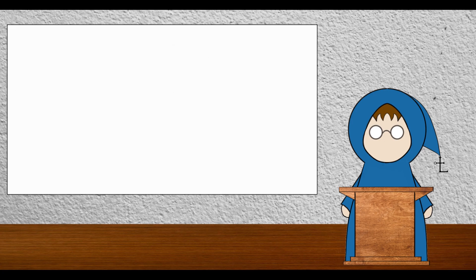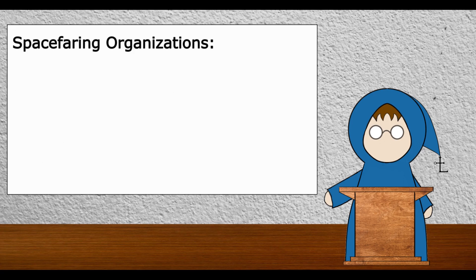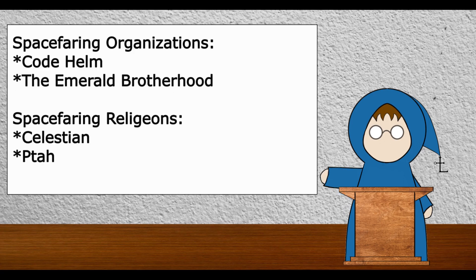After giving a description of locations in Realmspace, the chapter describes space-faring organizations like Code Helm and the Emerald Brotherhood, and religions like Celestian and Ptah.